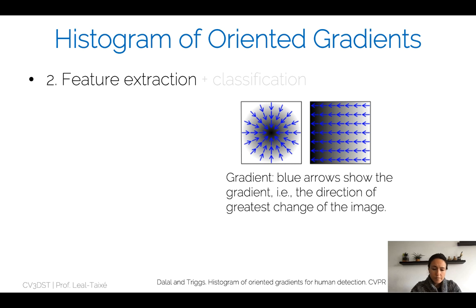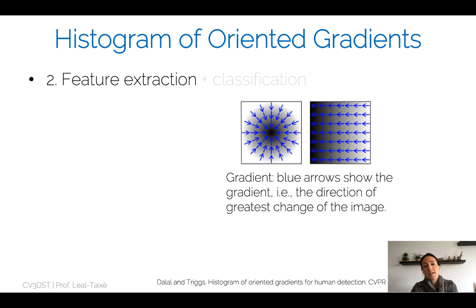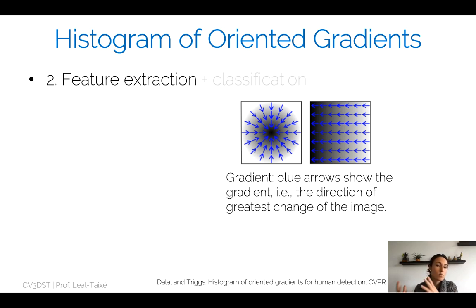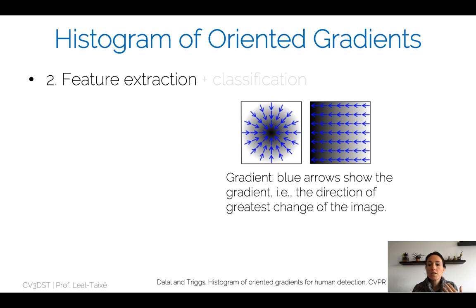A second very famous approach that works with the feature extraction plus classification paradigm is the Histogram of Oriented Gradients detector, or HOG detector. These are a more advanced set of features. If you want to improve upon this paradigm, you can improve the features or improve the classification — the machine learning algorithm. In this case, they did both: they presented a new set of features called the Histogram of Oriented Gradients, starting from the very strong notion of the gradient of an image, which you can see here depicted with blue arrows.